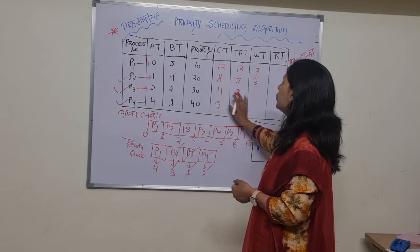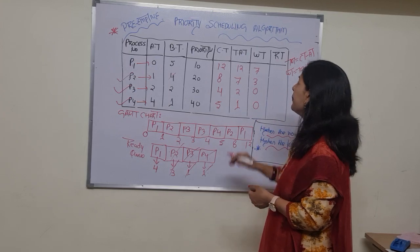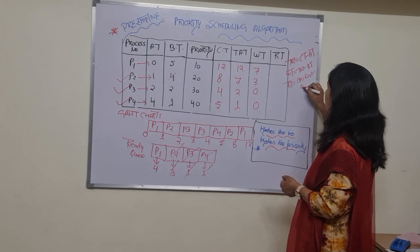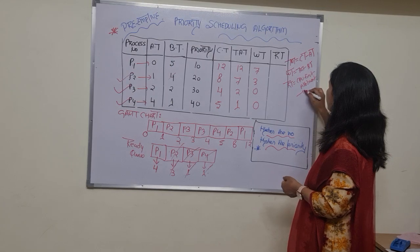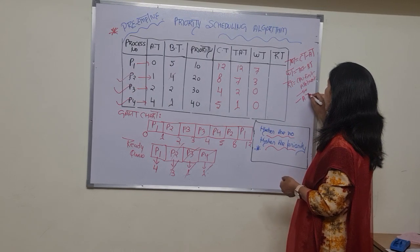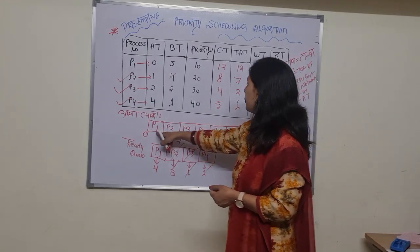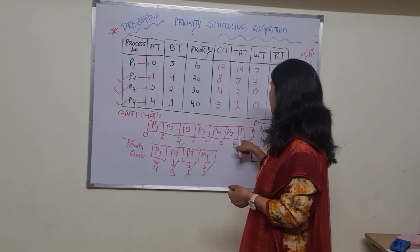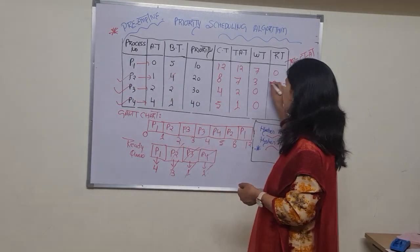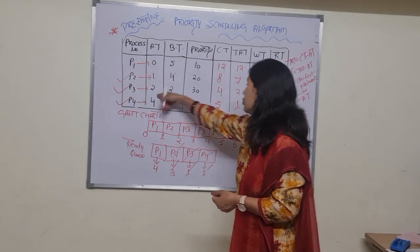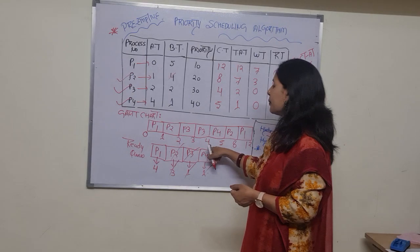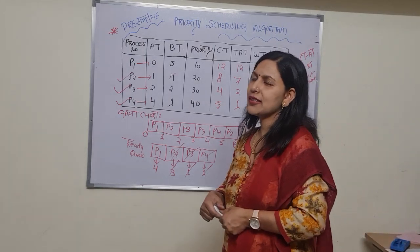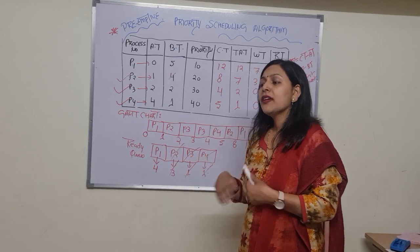The waiting time formula is: turnaround time minus burst time. So: P1 = 12 - 5 = 7, P2 = 7 - 3 = 3 (using actual burst time), P3 = 2 - 2 = 0, P4 = 1 - 1 = 0. The response time formula is: CPU first allotment time minus arrival time. P1 = 0 - 0 = 0, P2 = 1 - 1 = 0, P3 = 2 - 2 = 0, P4 = 4 - 4 = 0.